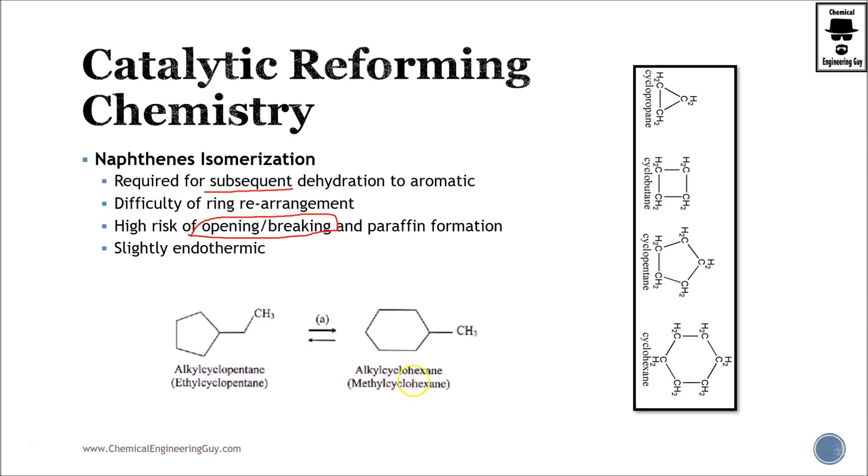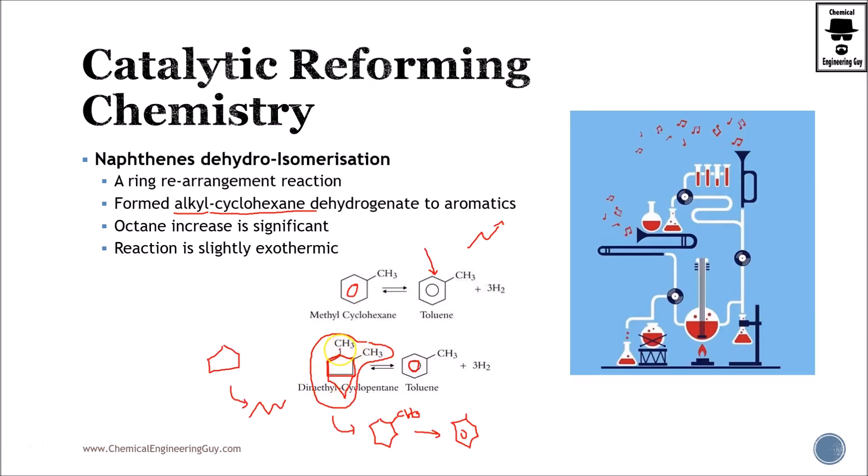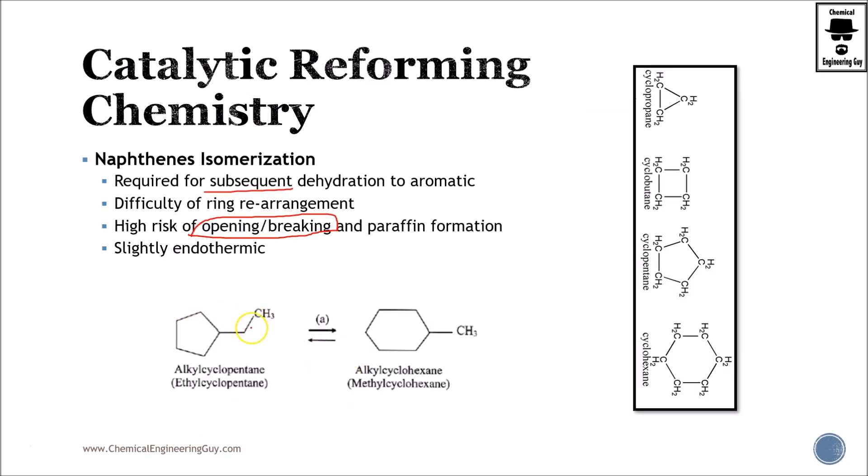Here is an example, alkylcyclopentane converts to alkylcyclohexane. This is actually pretty similar to this one. We have two methyl branches here, we have an ethyl branch. What we are doing here is we have five carbon rings here, six carbon rings here. I want to take advantage of this carbon in order to form this six carbon branch and instead of having an ethyl branch we're going to convert it to a methyl branch. Now why do we want to do that? Because then it's easier for us to dehydrogenate it and then convert it to an aromatic. Now here are examples of the cyclo molecules: propane, butane, pentane and hexane.